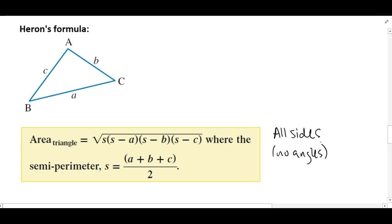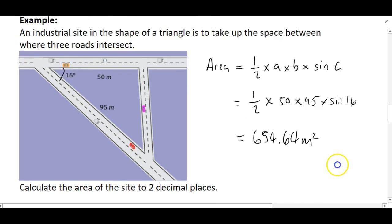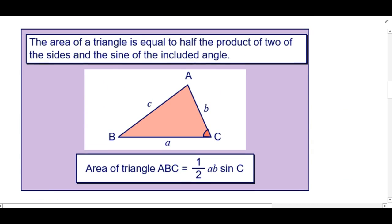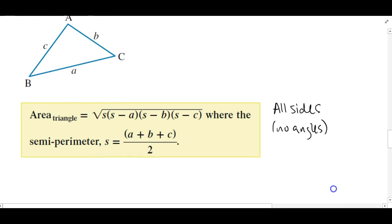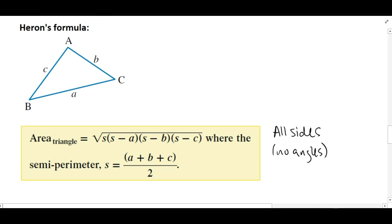If we contrast that with the other formula, you need to have at least one angle and two sides. So one angle and two sides for this one. So that's it really, just knowing when to use it. All the sides, no angles. And then you've just got to type it in correctly on your calculator.